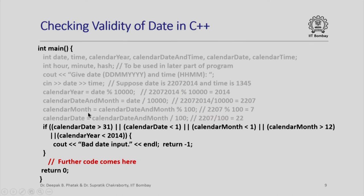After calculating these quantities, we do our check: if the calendar date is greater than 31 or less than 1, if the calendar month is less than 1 or greater than 12, or if the calendar year is less than 2014. We build a logical expression using the double bar (||) operator, which is the logical OR. If any of these conditions evaluates to true, we output bad date input, print an end of line, and return minus 1 to the caller — indicating something went wrong, as opposed to returning 0 when everything is fine.